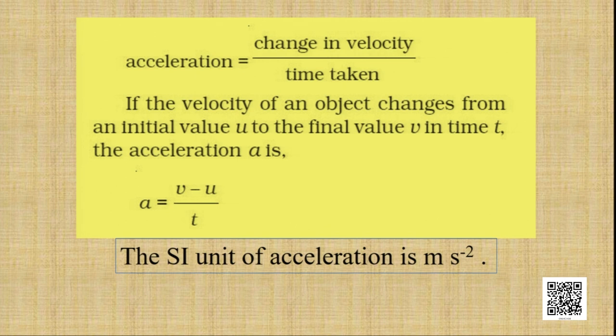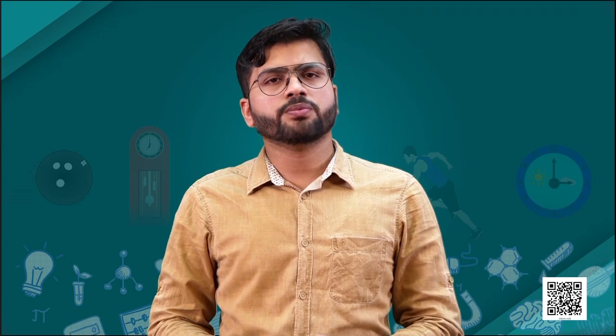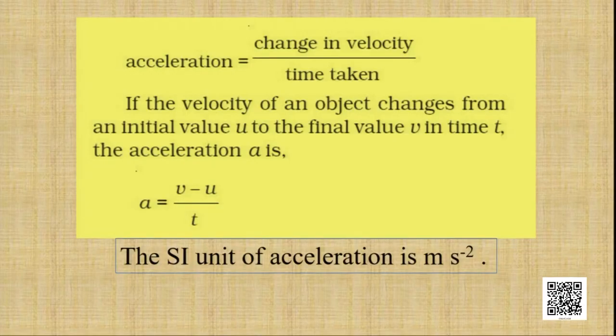That means take the final velocity, subtract it by the initial velocity, and divide it by the time period in which the change has taken place. The SI unit of acceleration is meter per second square.